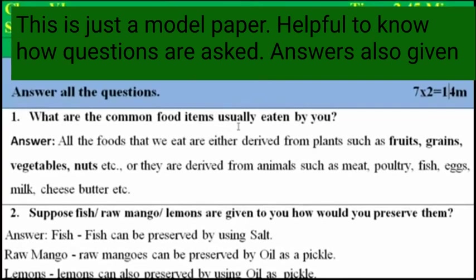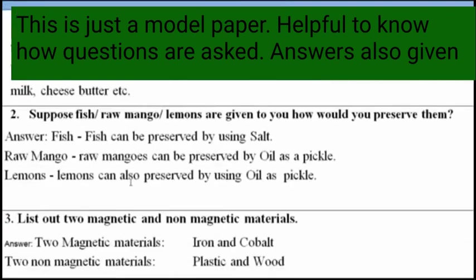First question: what are the common food items usually eaten by you? We eat either plant food or animal food. All the food we eat is either derived from plants such as fruits, grains, vegetables, nuts, etc., or derived from animals such as meat, poultry, fish, eggs, milk, cheese, butter, etc.